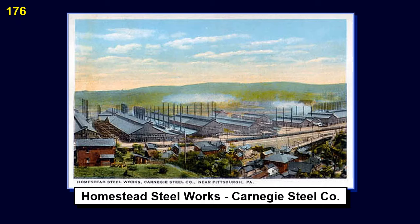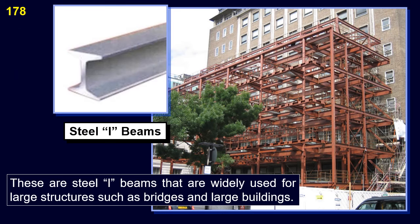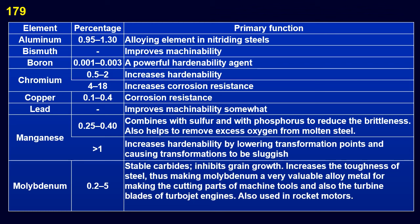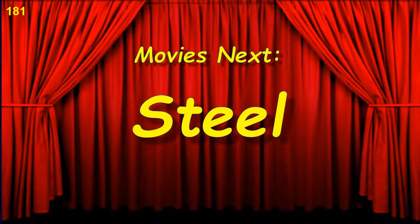This is the Homestead Steel Works of the Carnegie Steel Company. These are the Gary Works of United States Steel. These are steel I-beams that are widely used for large structures such as bridges and large buildings. These are various alloying elements that are added to steel to improve its strength or durability. We will next have a series of short videos on the production of steel.